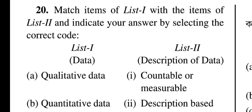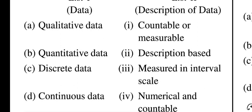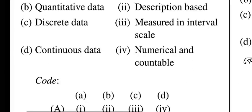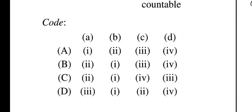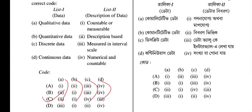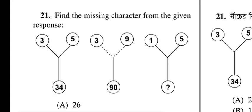Question twenty: match items of list one (types of data) with list two (descriptions). Data types: qualitative data, quantitative data, discrete data, continuous data. Descriptions: countable or measurable, description based, measured in interval scale, numerical and countable. Option C is correct: A (qualitative data) = description based; B (quantitative data) = countable or measurable; C (discrete data) = numerical countable; D (continuous data) = measured in interval scale.